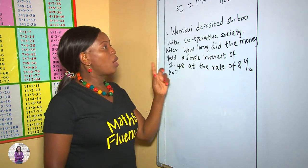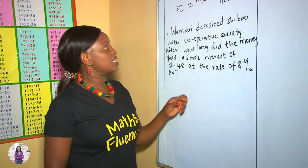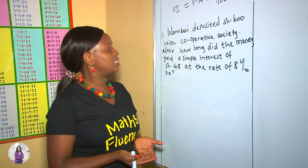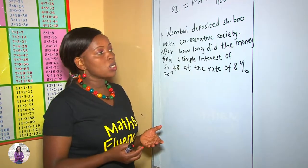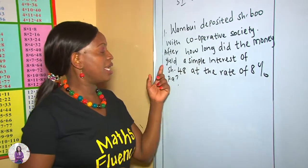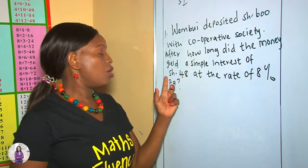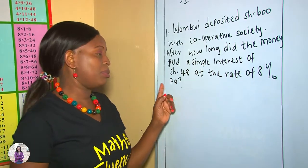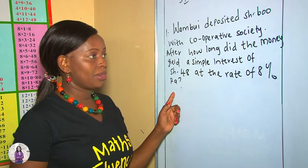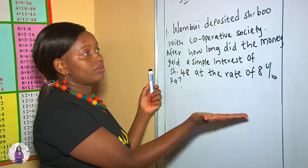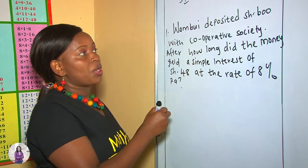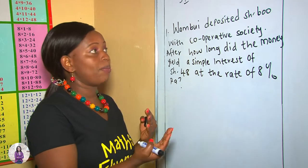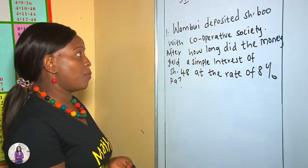Let's begin with our first question. We are told that Avo deposited 600 shillings with a cooperative society. After how long did the money yield a simple interest of 48 shillings at the rate of 8% per annum? We need to analyze it step by step — what we are given and what we are looking for.